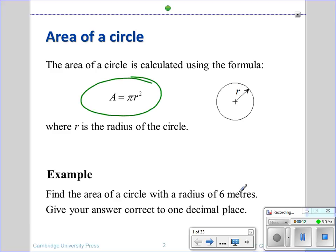It's pi r squared, where r is the radius of a circle. Remember the radius goes from the centre to the outside of the circle. Centre to the outside. You might sometimes get a diameter, in which case you'll have to change it to a radius.